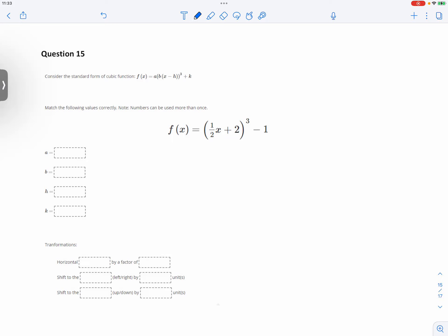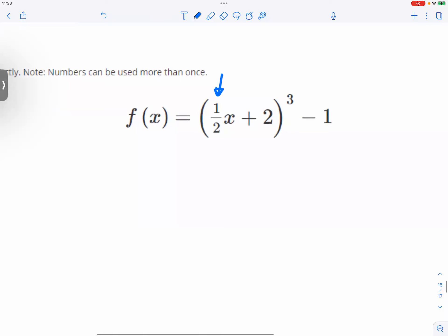So the first thing that should bother you is the fact you have a one-half in front of the x. So what you can do is put one-half in the front. Factor out the one-half.